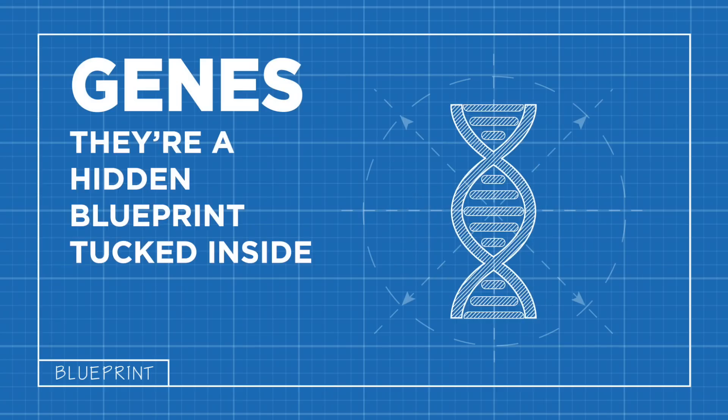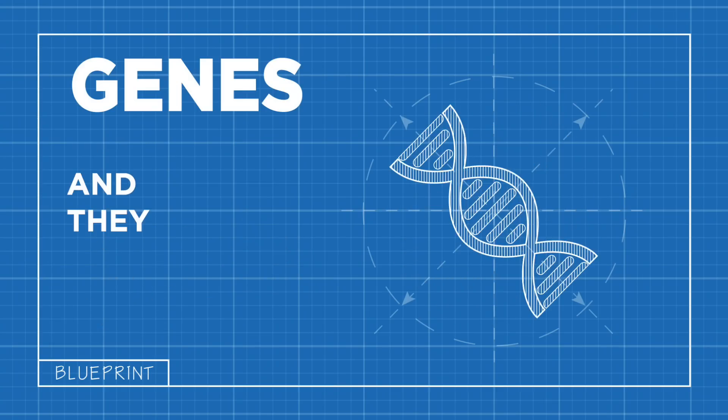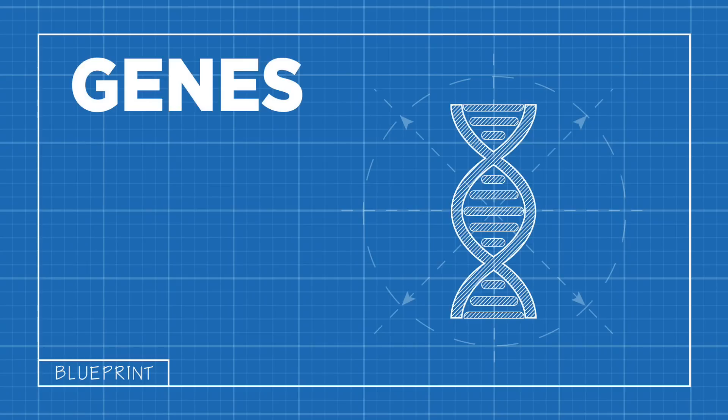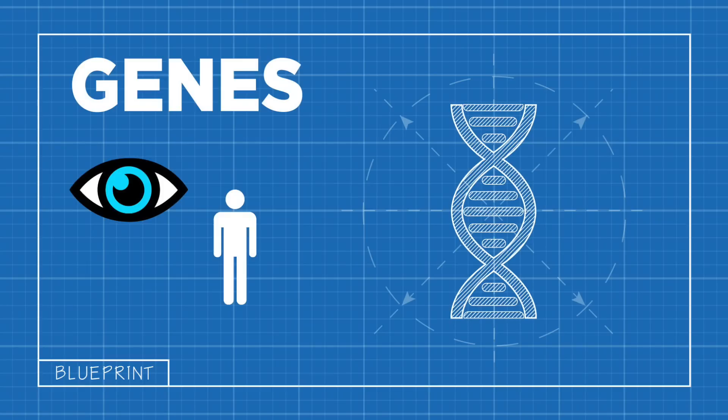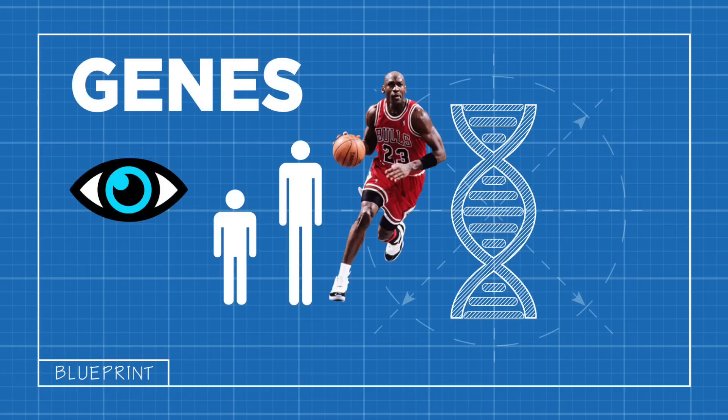They're a hidden blueprint tucked inside our trillions of cells, and they make us who we are, like whether we have blue eyes, or whether we're short or tall, or good at basketball.